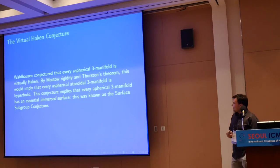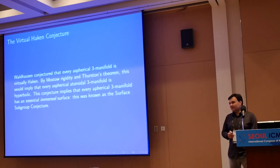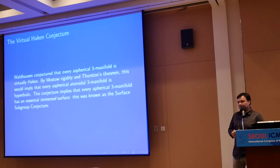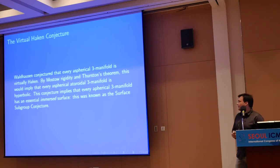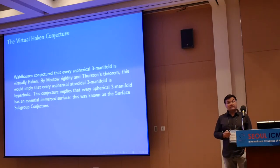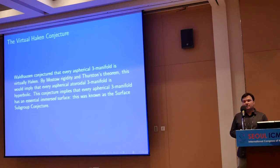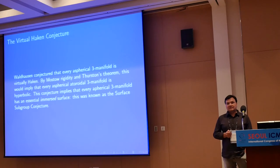That's more or less the classical theory of three-manifolds from the 60s. Unfortunately, not all three-manifolds are Haken — in some sense most closed three-manifolds are not Haken. That's somewhat disturbing, except that Waldhausen conjectured in the 60s that every aspherical three-manifold should have a finite cover that is Haken. So if we cannot directly understand the three-manifold itself, maybe we can understand the topology of its cover.